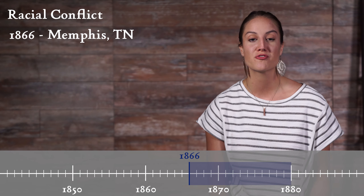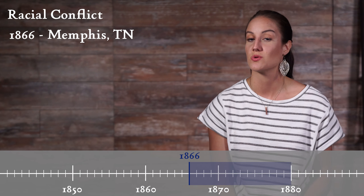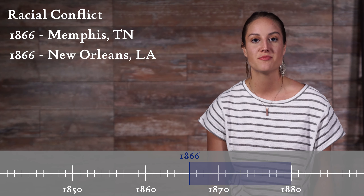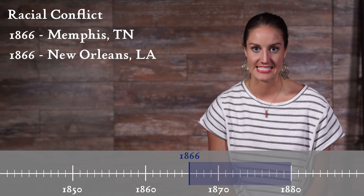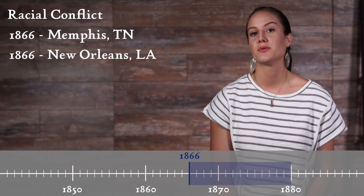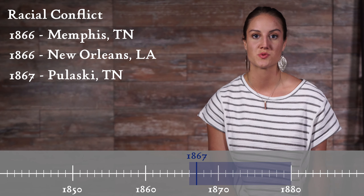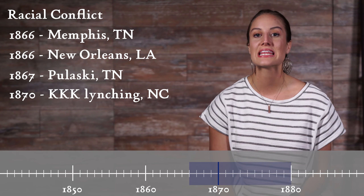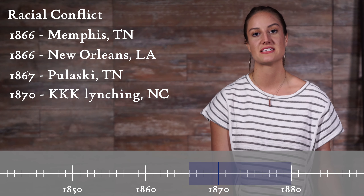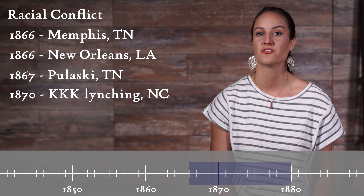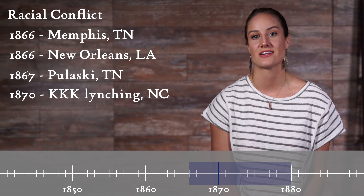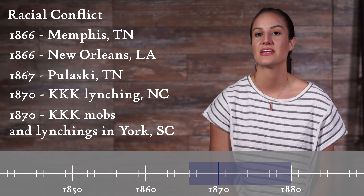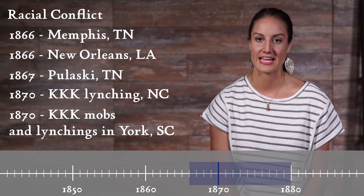Racial violence and Black intimidation by the Ku Klux Klan and other organizations happened all over the South in the late 1860s and 1870s. In 1866, a number of people died when Black soldiers, white civilians, and Irish policemen clashed in Memphis. Dozens of Blacks were killed in New Orleans in riots in 1866. There were more riots in Pulaski, Tennessee, in 1867, which was the birthplace of the Ku Klux Klan. In 1870, the KKK had apparently lynched Wyah Outlaw, the first Black man elected town commissioner and constable of Graham, North Carolina, along with white state senator John Stevens. More KKK mob violence and lynchings happened in York County, South Carolina, in 1871.